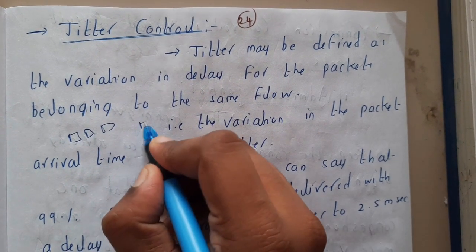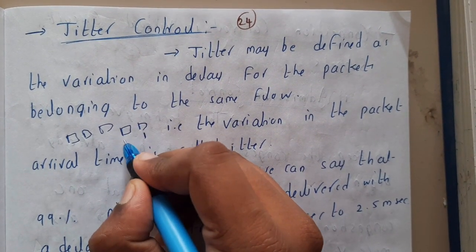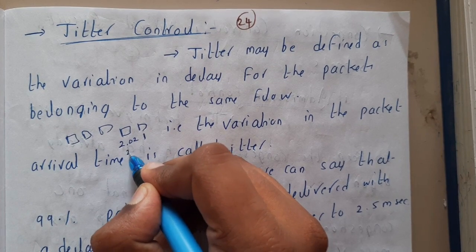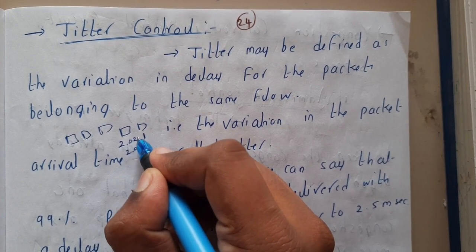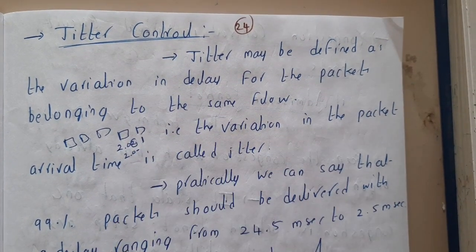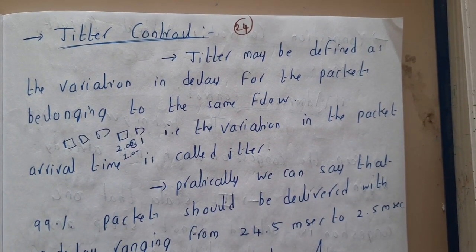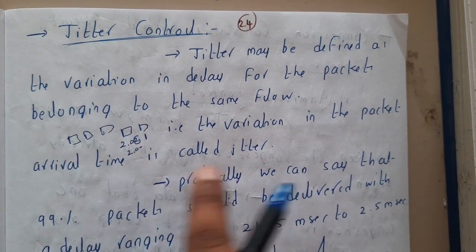So the first packet reached at 1 second and the second packet reached at 2.02 seconds, but it should reach at 2 seconds. So there is a minute delay, right? So this is nothing but jitter control. The variation in the packet arrival time is nothing but jitter.